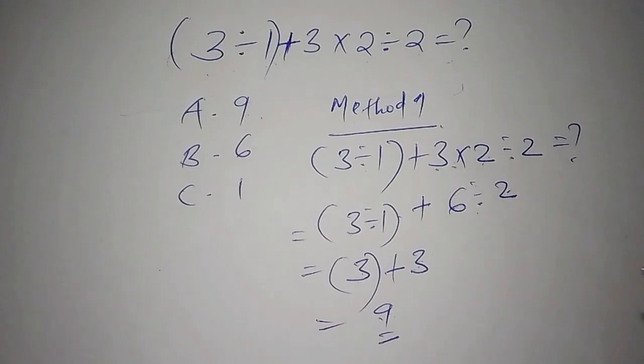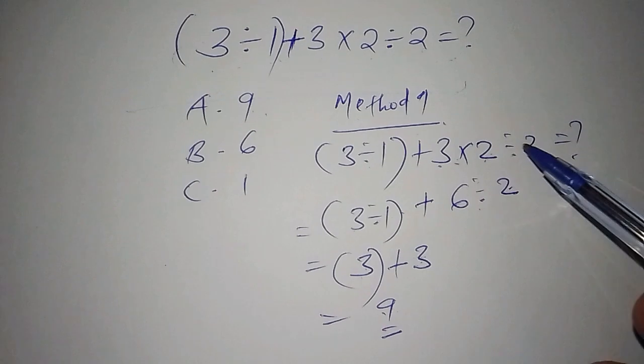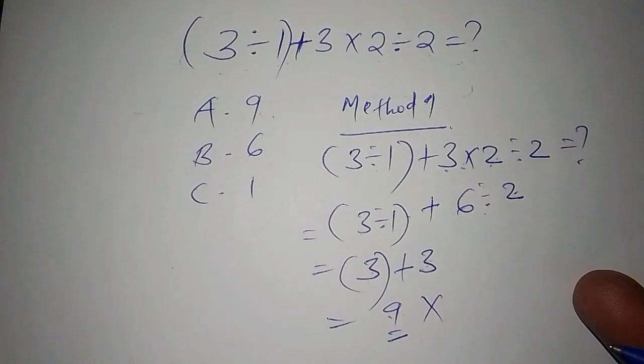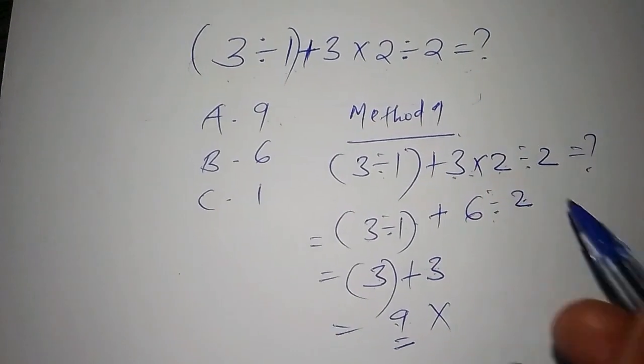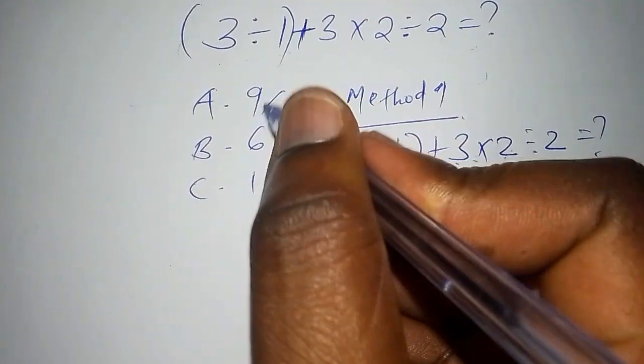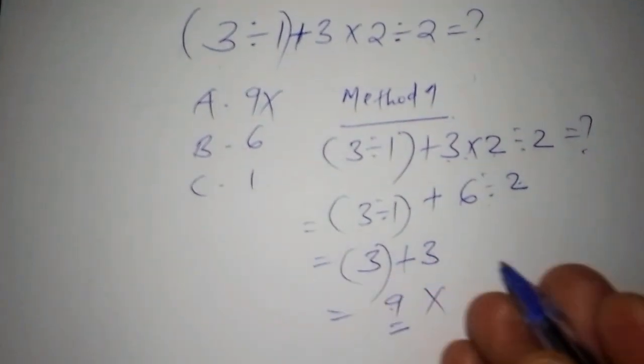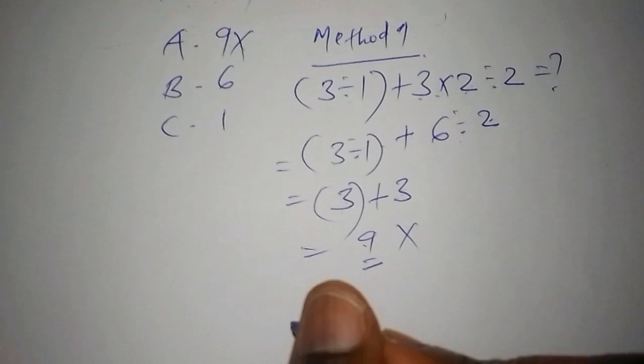Not only them got the answer as 9, but a number of people got it as 9. Based on the method that was used, we can rule this 9 as not the correct answer.